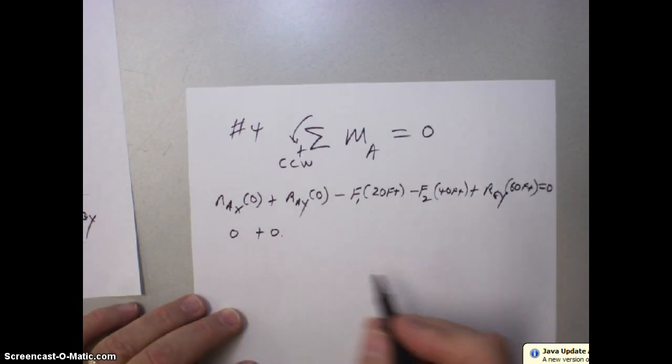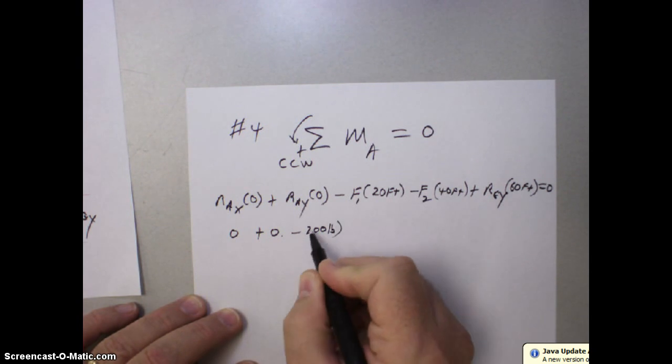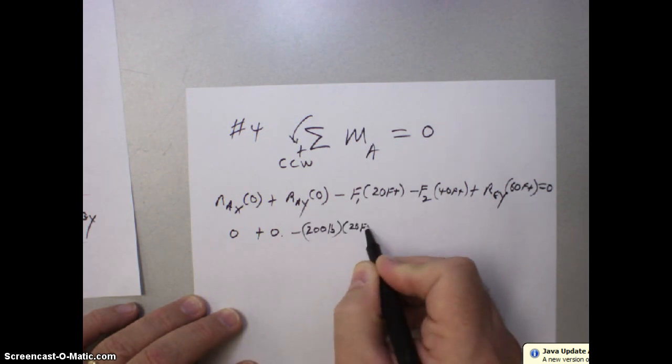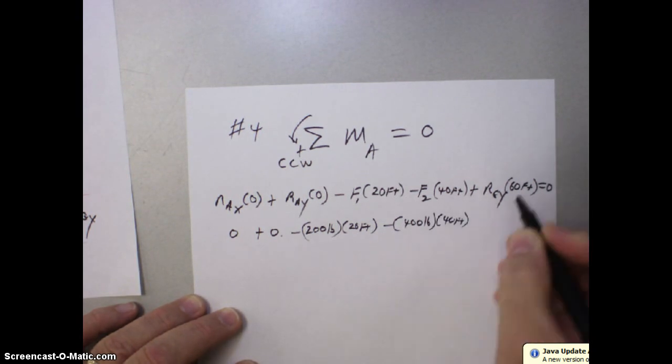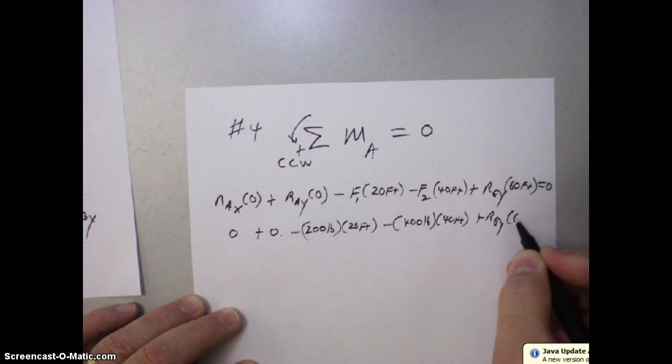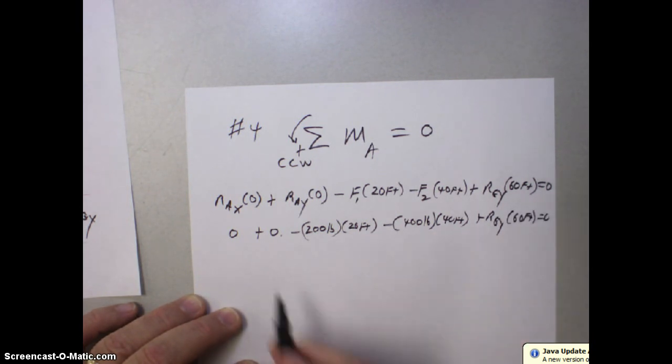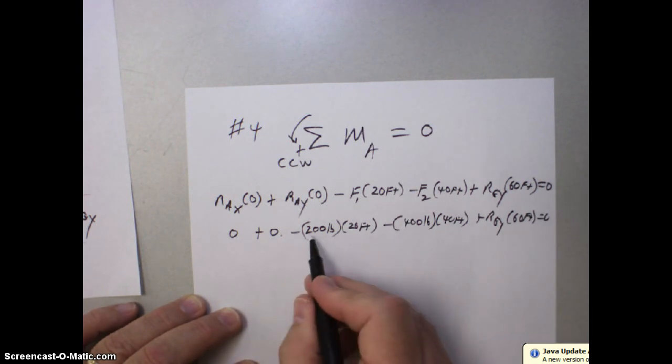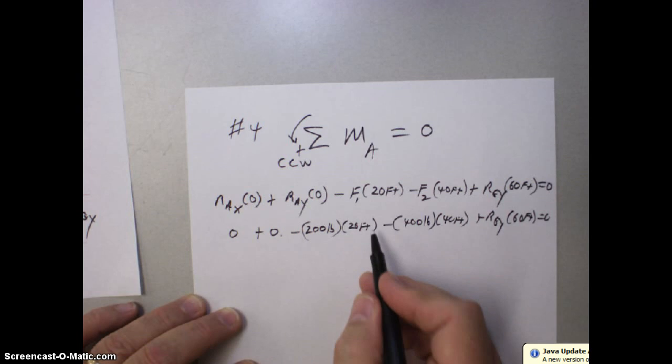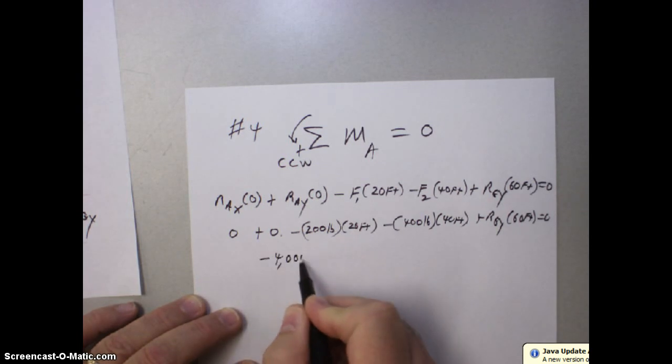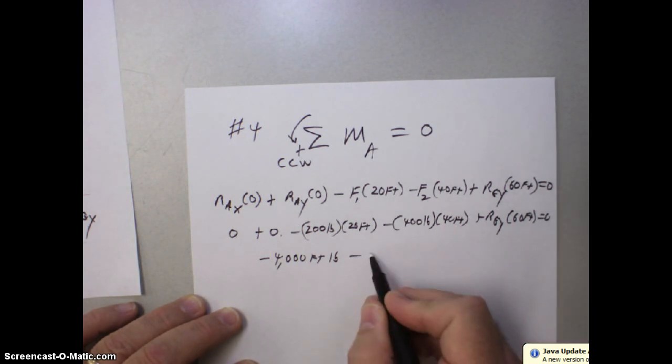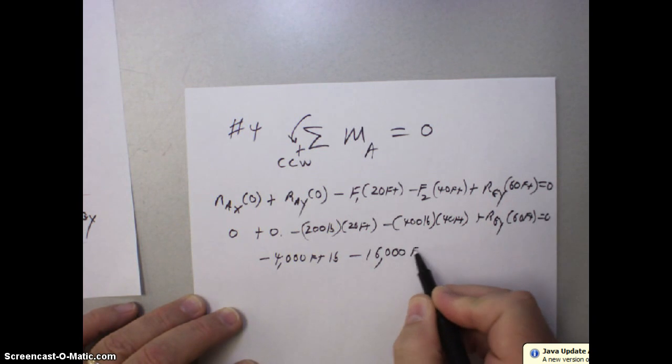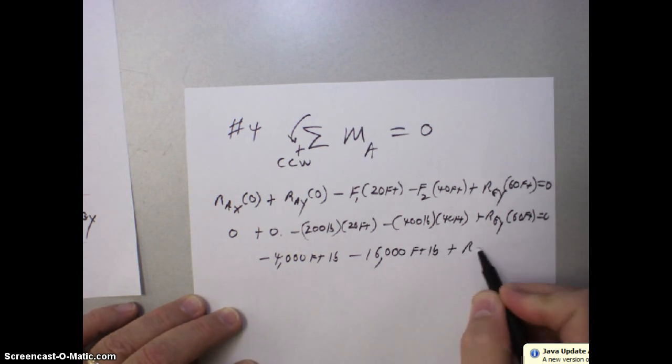So zero plus zero minus 200 pounds times 20 feet minus the 400 pounds times the 40 feet. And just carrying this on down, RGY times 60 feet equals zero. Zero and zero is zero minus 200 pounds times 20 feet is minus 4,000 foot-pounds.